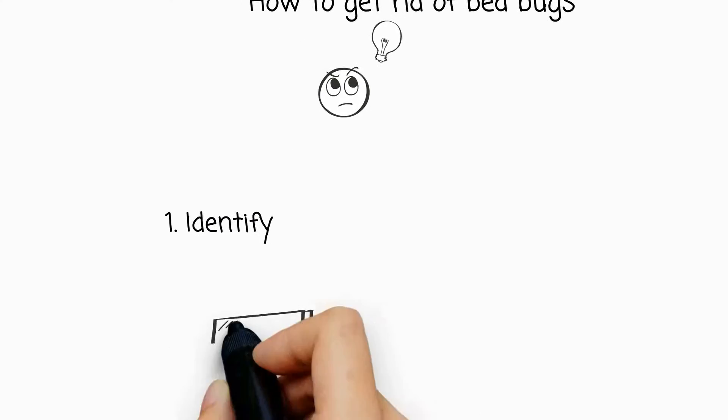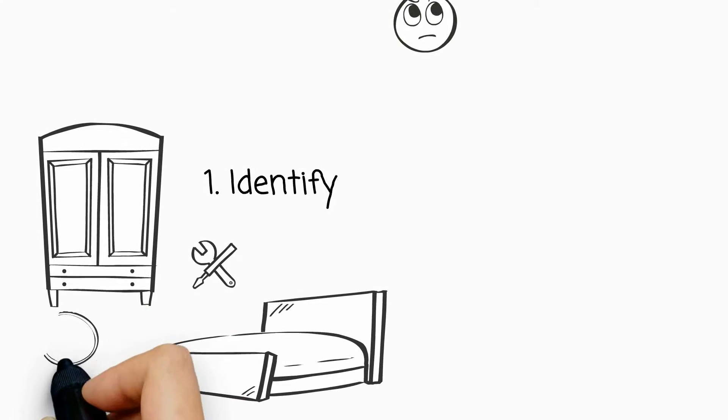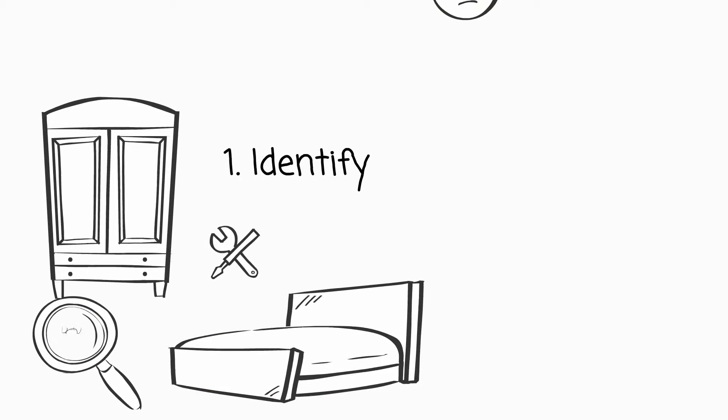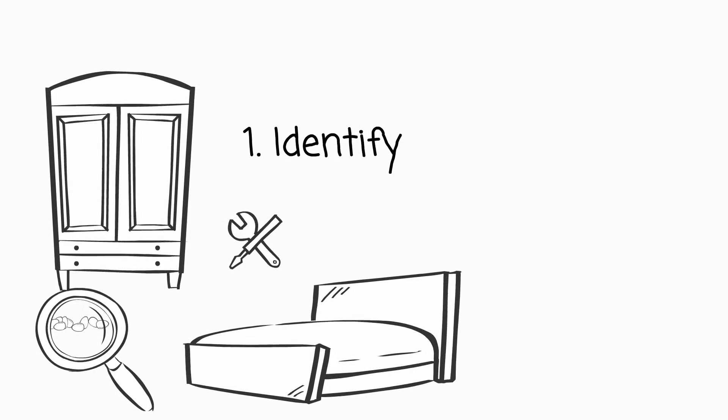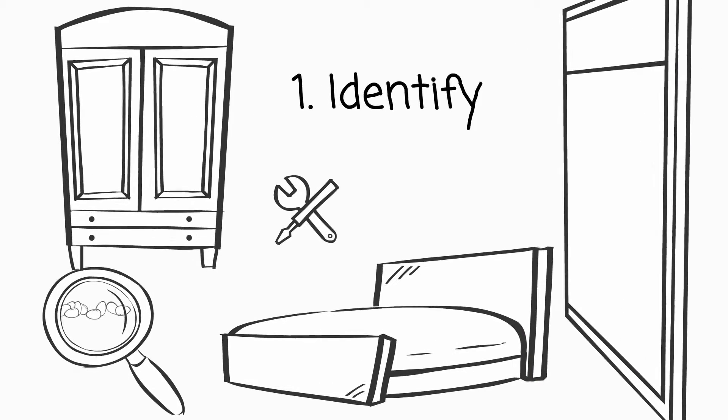Firstly, you need to dismantle your bed and any other furniture and look for signs of live bedbugs, eggs and excrement. Pay close attention to the cracks in the crevices and also look around the room with a torch, around the walls, the carpet and any other wooden features.